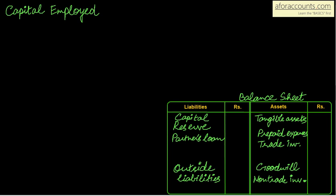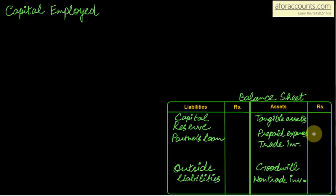When a balance sheet is given to us, we take all tangible assets plus prepaid expenses plus non-trade investments. We have to exclude goodwill from all the assets and then subtract all outside liabilities, excluding reserves and partners loan. If nothing is mentioned about investments, they should be considered as trade investments — so consider them and take them.